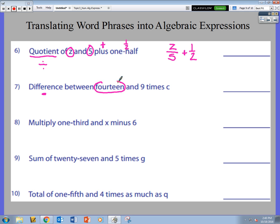I have 14, and what am I subtracting from 14? Well, it's 9 times c. I have a number times a variable, so this becomes the coefficient. Find the difference: 14 minus 9 times c.